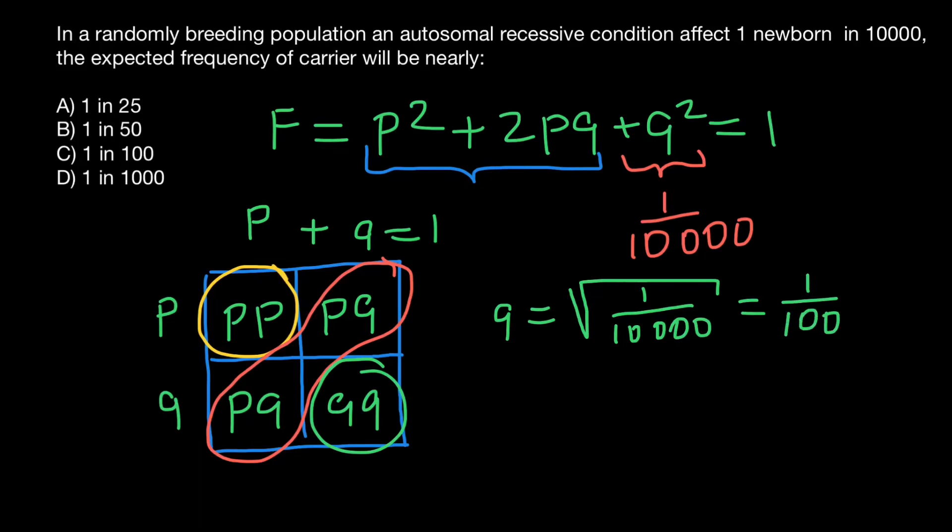And that means that frequency of the P allele would be 99 out of 100. And now we can find the frequency of the carrier, or heterozygotes, which is here, which is in our formula also here.